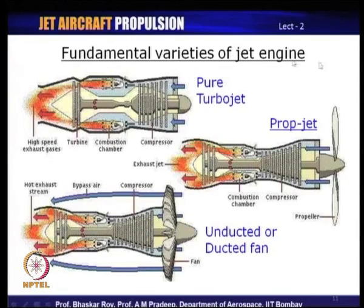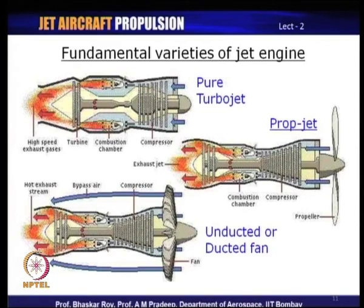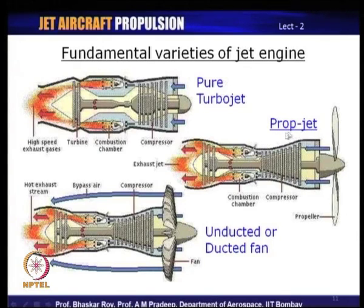The next variant historically is the prop jet engine, in which a fundamentally turbo engine is used to drive a propeller. Propellers have been around for more than 100 years for making thrust, but in this case a gas turbine-based engine runs the propeller to create thrust. In the prop jet version, you get a good amount of thrust from the propeller and certain thrust from the jet — hence it is called a prop jet engine.